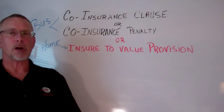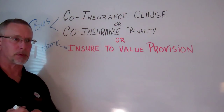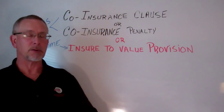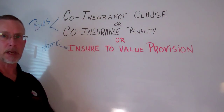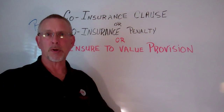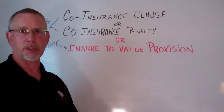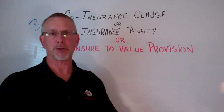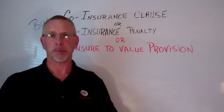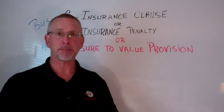Co-insurance is a clause in your homeowners or business policy to prevent people from under-insuring their homes or their business in order to save on premium money. All premiums are set by the actuaries according to the assumption that 100% co-insurance is in place — in other words, you have the building insured to 100% of its replacement cost.